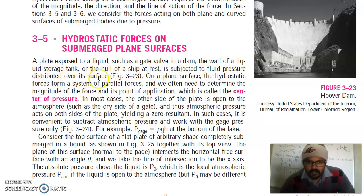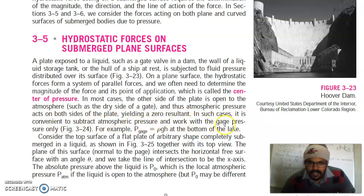On a plate surface, the hydrostatic forces form a system of parallel forces, and we often need to determine the magnitude of the force and its point of application, which is called the center of pressure. In most cases, the other side of the plate is open to the atmosphere, and thus atmosphere pressure acts on both sides of the plate, yielding a zero resultant. In such cases, it is convenient to subtract atmosphere pressure and work with gauge pressure only. For example, P_gauge equals ρgh at the bottom of the leg.